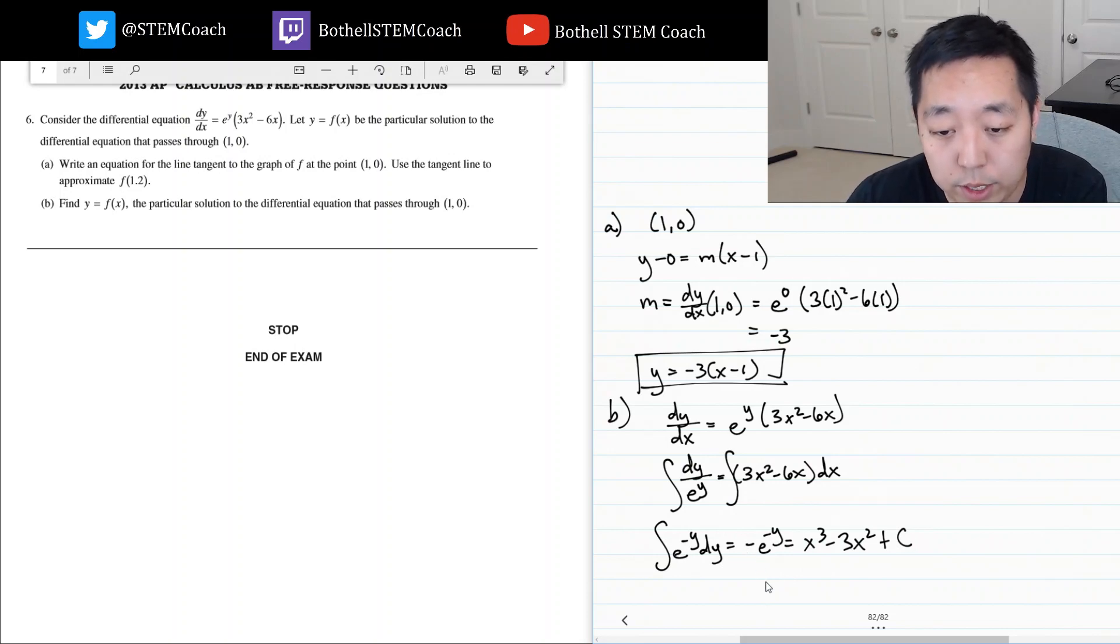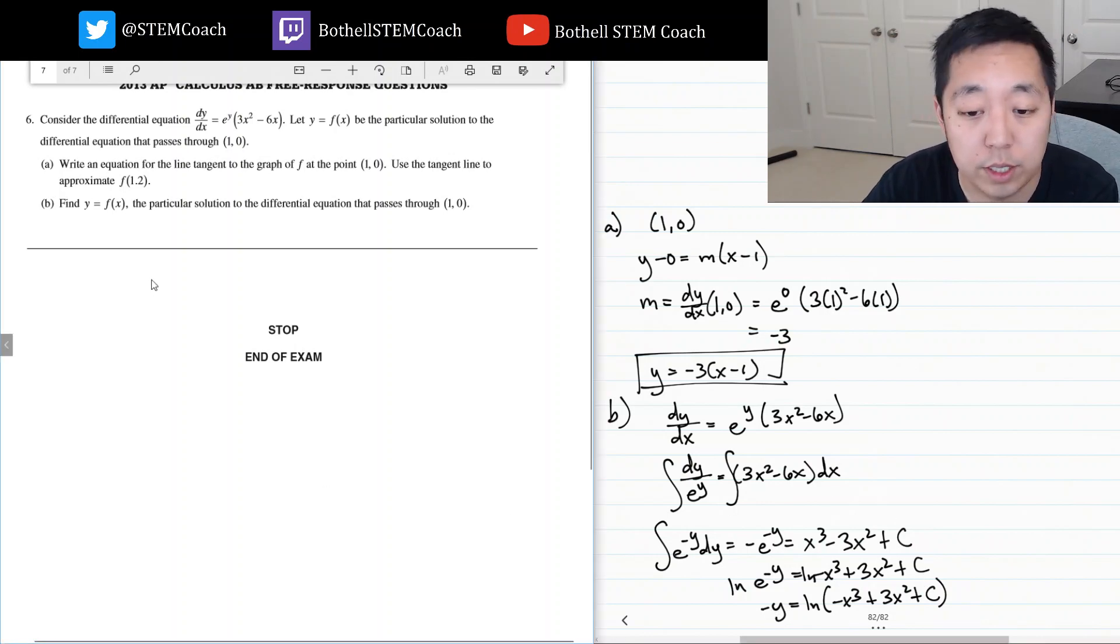I can multiply through by negative one. I get e to the negative y equals negative x cubed plus three x squared and then plus a constant because I haven't solved for that constant yet. Then I take the natural log of both sides. So negative y equals natural log of negative x cubed plus three x squared plus c. Rearranging, y equals negative ln negative x cubed plus three x squared plus c.